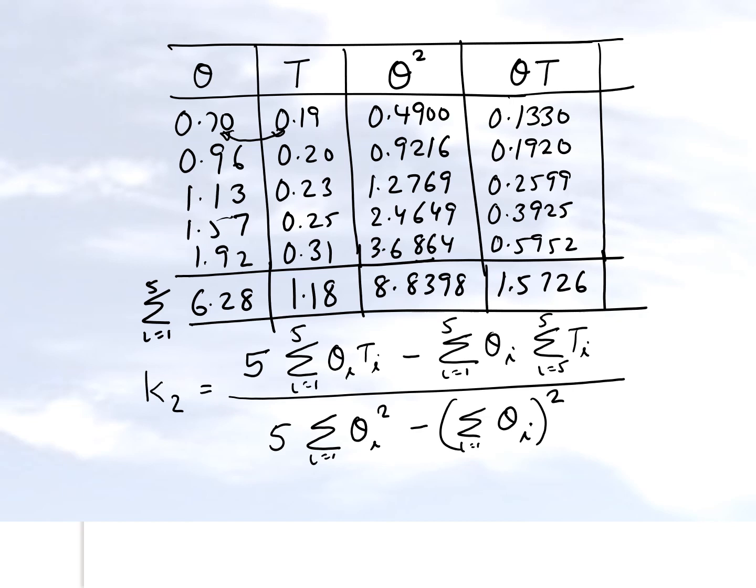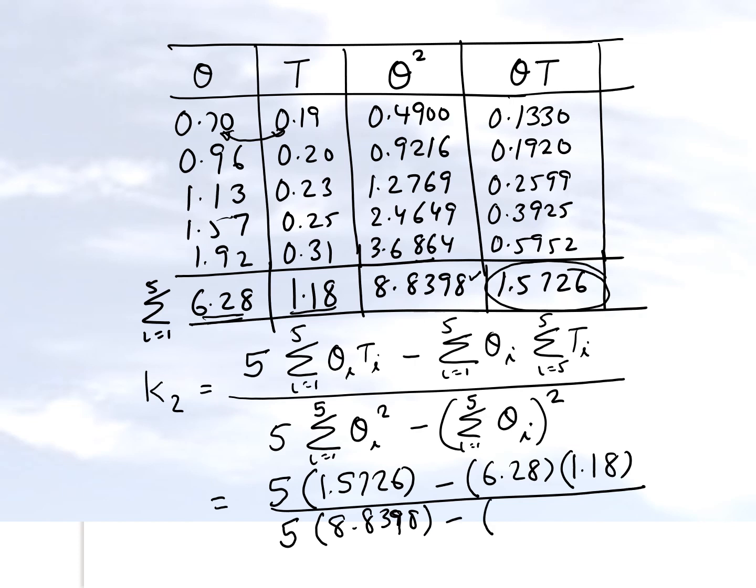So we can now substitute the values which we just found out. So it's five, summation of theta i T sub i is right here, that's 1.5726. The summation of theta i is right here, the summation of T sub i is right here. And let's divide by five times the summation of theta square, which is given by this quantity right here, and then the summation of theta i, and then squaring it will be this quantity right here squared. And this number here will turn out to be equal to 0.09507.